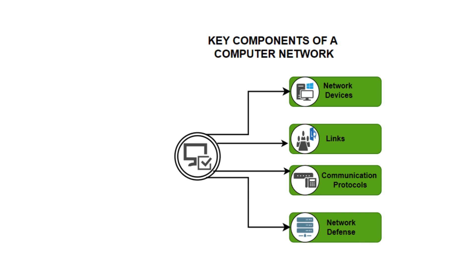The key components of a computer network are: network devices, links, communication protocols, and network defense. Network devices include network interface cards, repeaters, hubs, bridges, switches, routers, and gateways. Links can be wired or wireless. Communication protocols include the network access layer, internet layer, transport layer, and application layer.